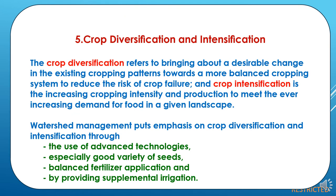The fifth component is crop diversification and intensification. Crop diversification refers to bringing about a desirable change in existing cropping patterns towards a more balanced cropping system to reduce the risk of crop failure. Crop intensification is the increasing of cropping intensity and production to meet ever-increasing food demand. Watershed management puts emphasis on crop diversification and intensification through use of advanced technologies, especially good variety seeds, balanced fertilizer application and supplemental irrigation.